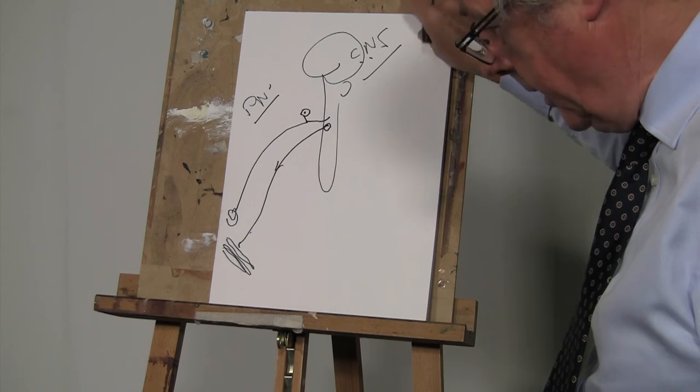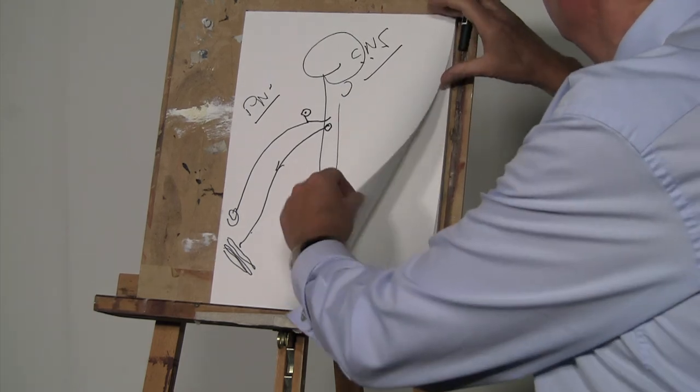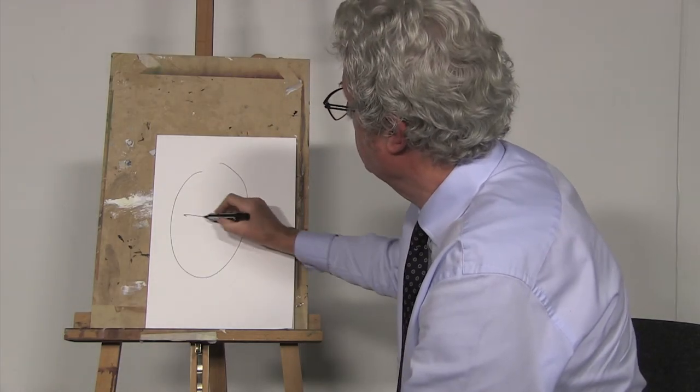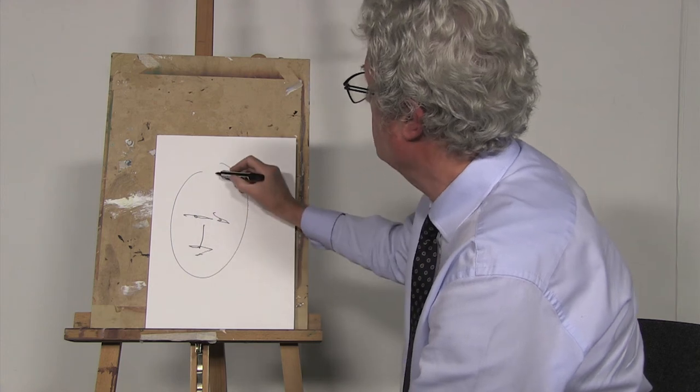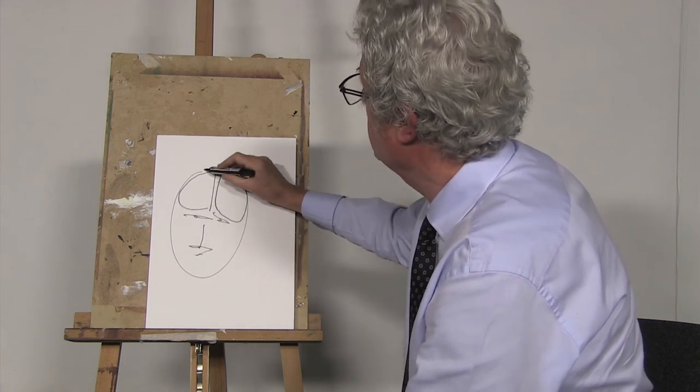Or I might, for example, be trying to tell the students about epilepsy and different types of epilepsy. So if we just draw our fellow and his brain, there are two types of epilepsy.